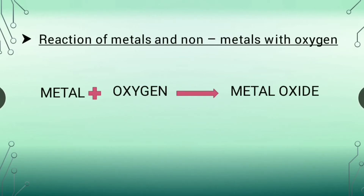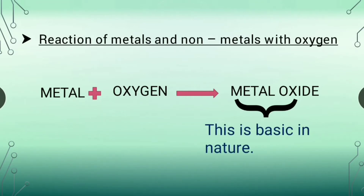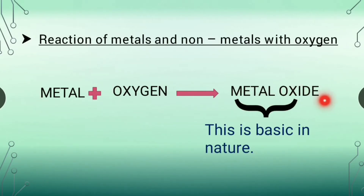Metals react with oxygen to form metal oxides, which are also called metallic oxides. These are basic in nature. When a metal reacts with oxygen, metal oxide is formed.